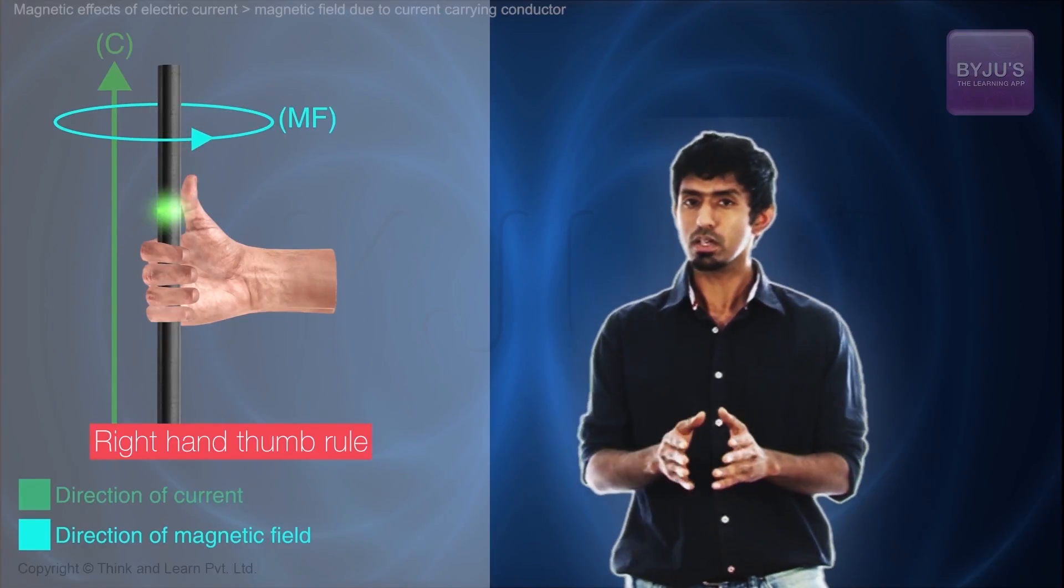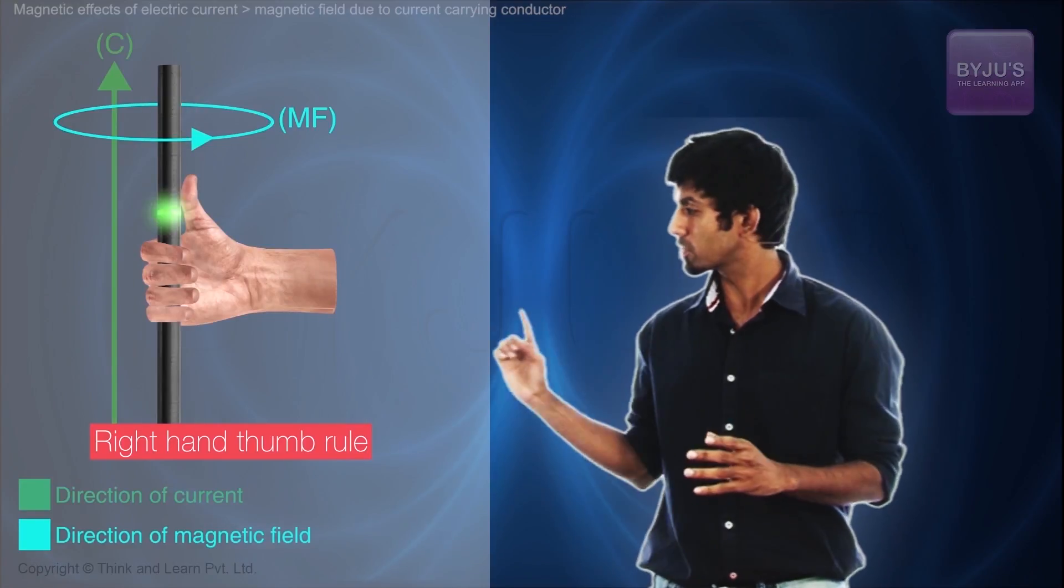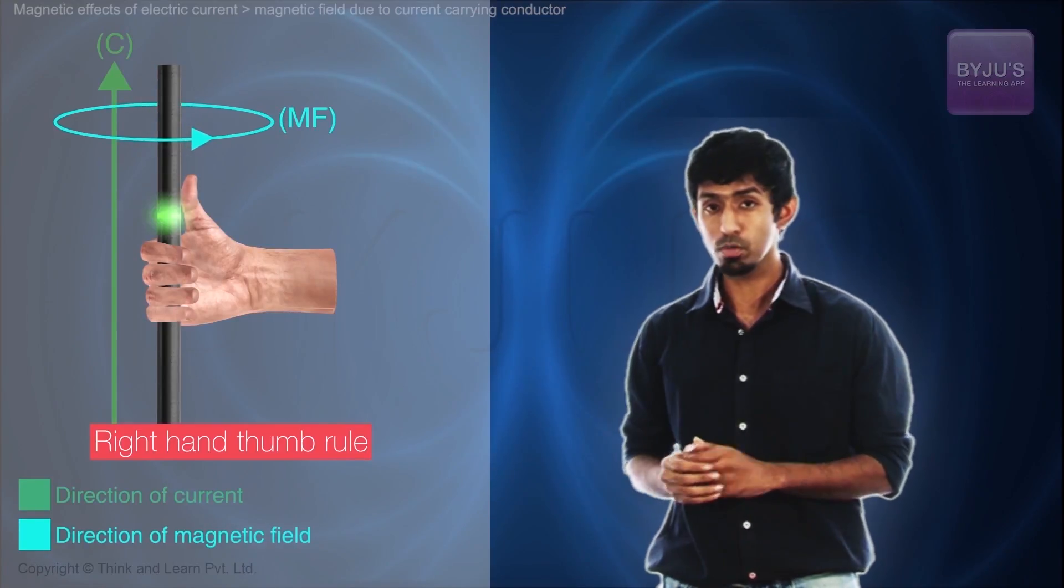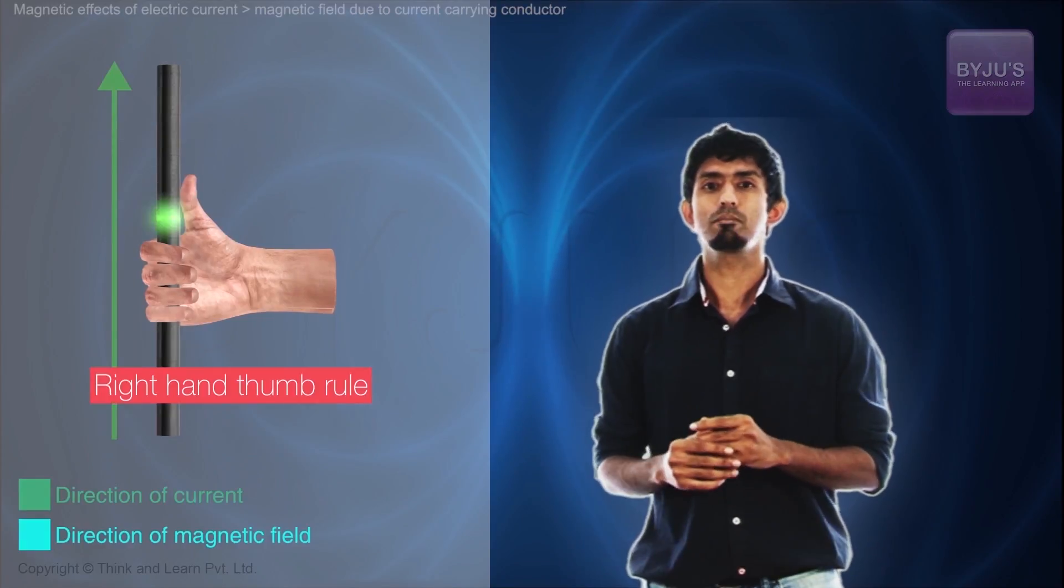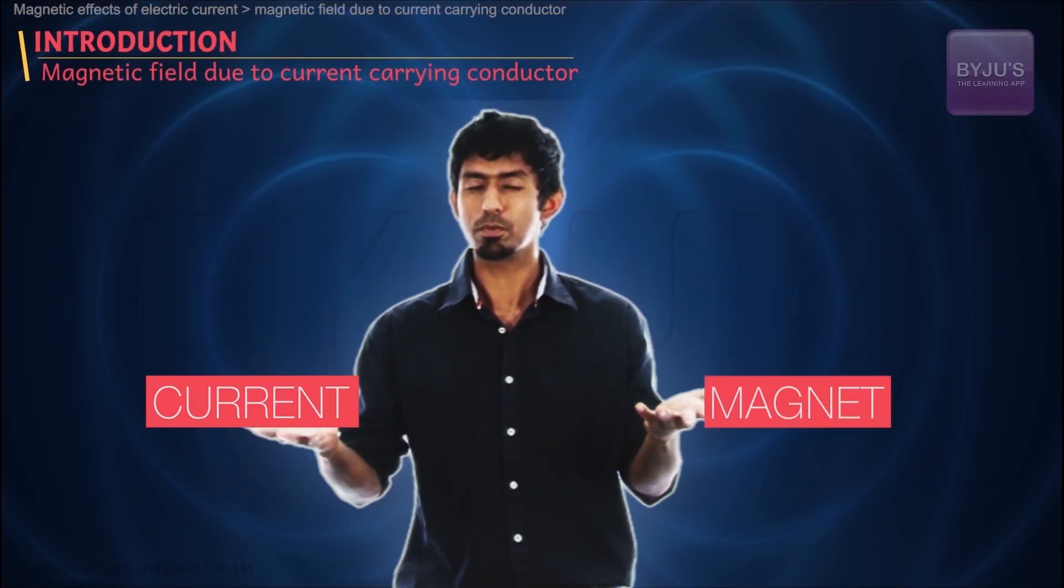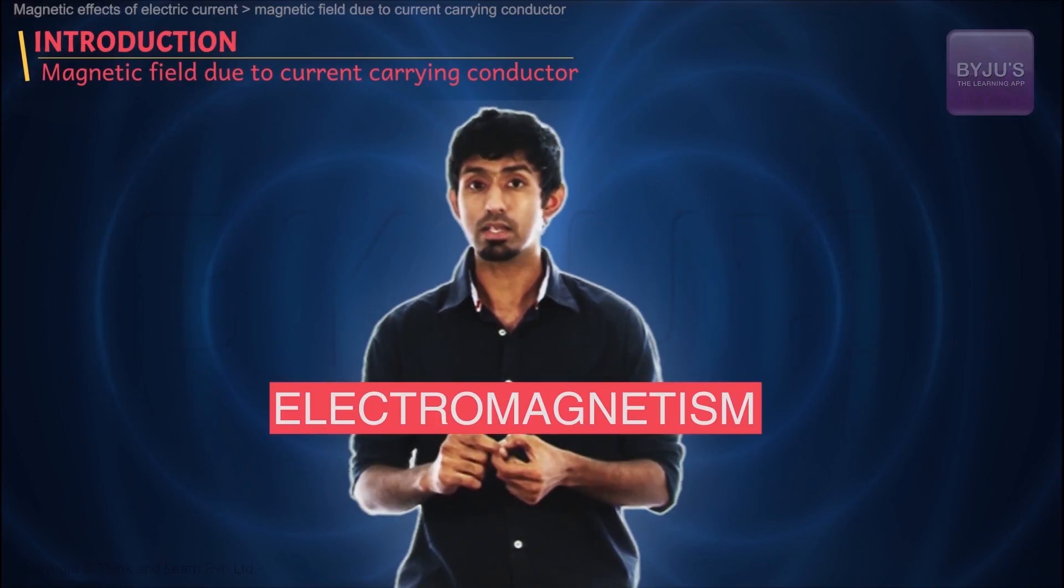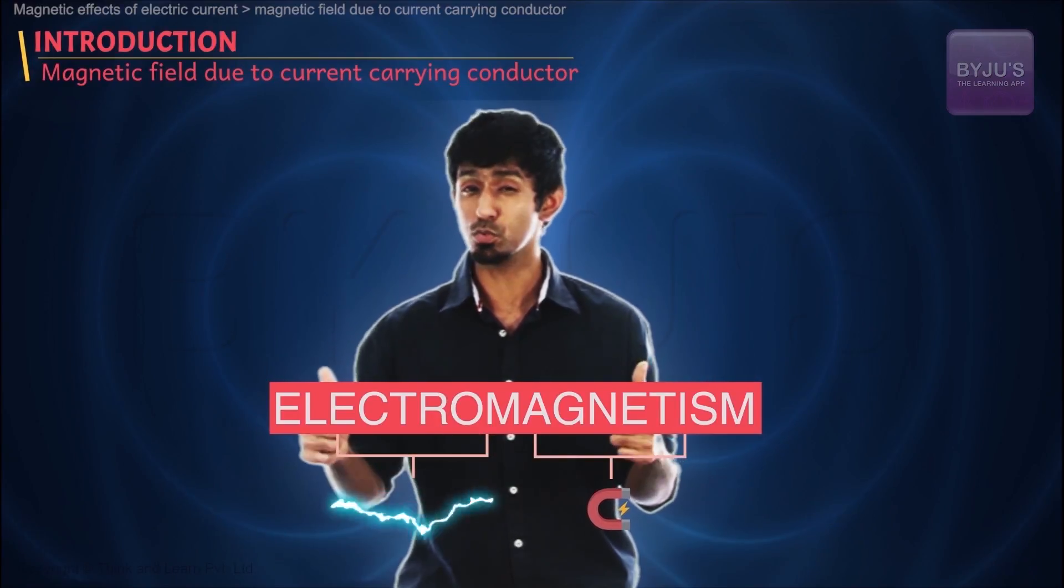Now what's most interesting here is not that we can find the direction of it, which is pretty easy to do using a right hand thumb rule, but the fact that all of a sudden, two things that were separate have become connected now, electricity and magnetism. That is huge.